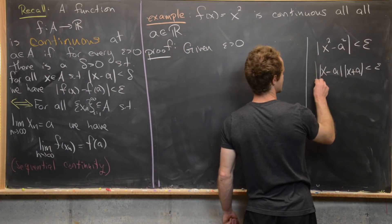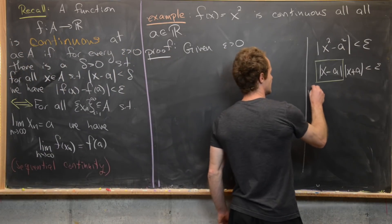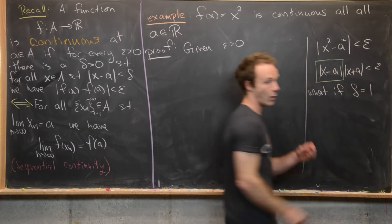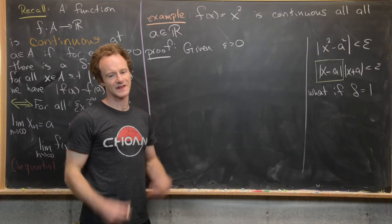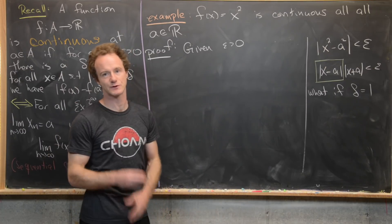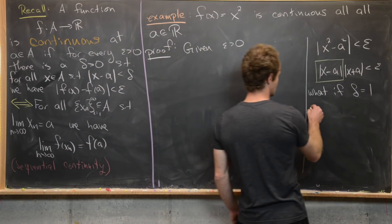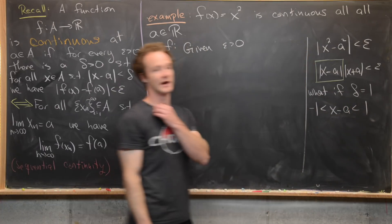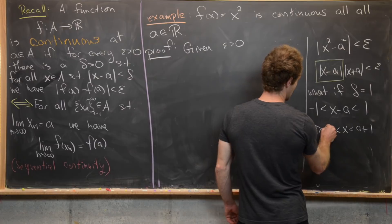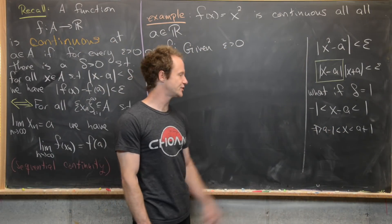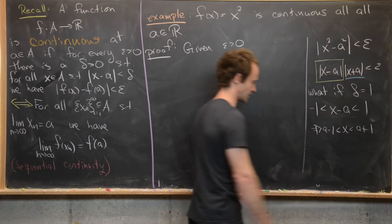We want a handle on the |x + a| term, because |x − a| is exactly what appears in the definition. So let's consider δ = 1 — most likely the ε challenge will require a much smaller δ, but for ease of calculation let's see what happens. If δ = 1, then |x − a| < 1, which means −1 < x − a < 1, so x is between a − 1 and a + 1. Adding a to all three parts, we get 2a − 1 < x + a < 2a + 1, which will help us bound |x + a|.